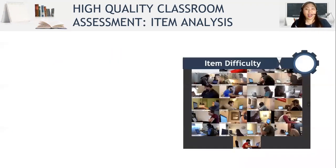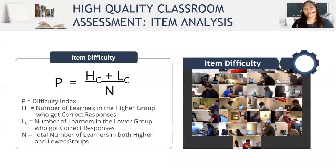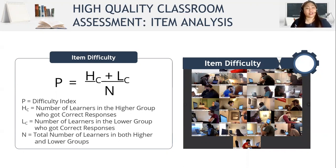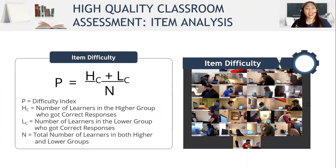Next is the formula for item difficulty. We have P = (HC + LC) / N, where P is the difficulty index, HC is the number of learners in the higher group who got correct responses, LC is the number of learners in the lower group who got correct responses, and N is the total number of learners in both the higher and lower groups.